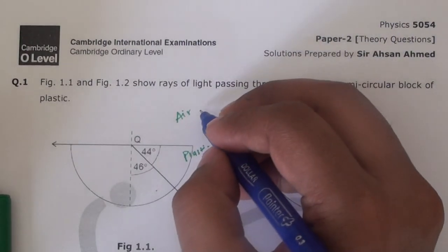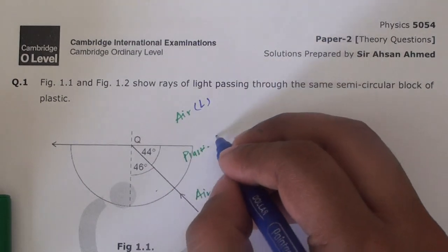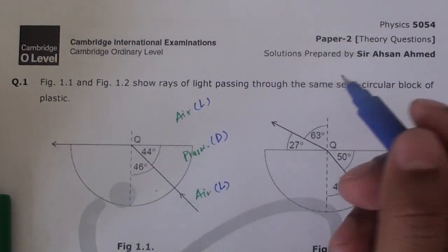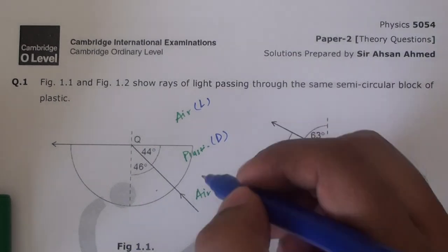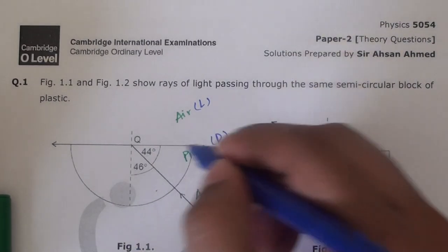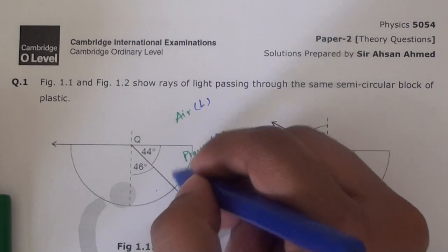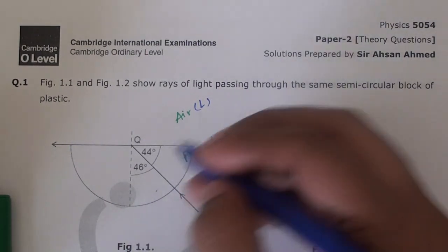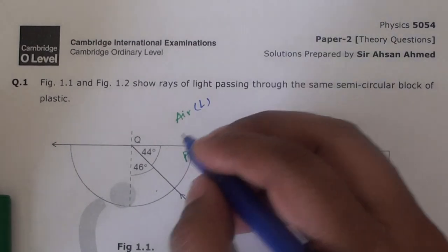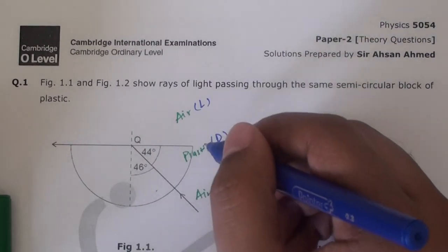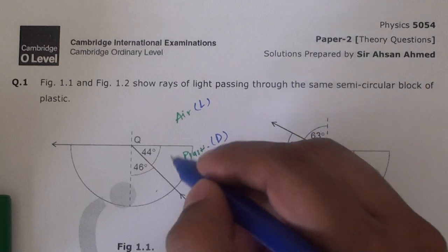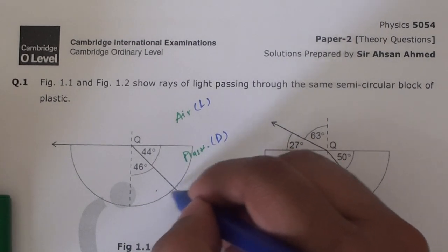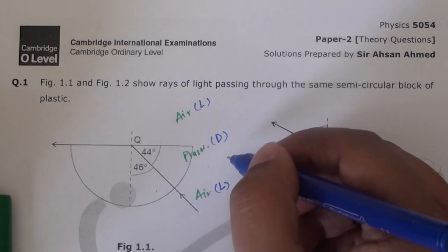But here a lot of students ask which formula to apply, how to analyze whether to use lighter to denser or denser to lighter. The idea is there are no angles to work with here. Have they given any angle?